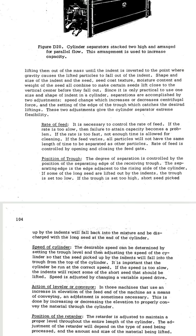The last adjustment in the cylinder separator is the position of the retarder. The retarder is adjusted to maintain the proper level throughout the entire length of the cylinder. The adjustment of the retarder will depend on the type of seed being processed and the amount and size of material being lifted. These are the important adjustments in the indented cylinder separator: rate of feed, position of trough, speed of cylinder, action of leveler or conveyor, and position of retarder. Thank you.